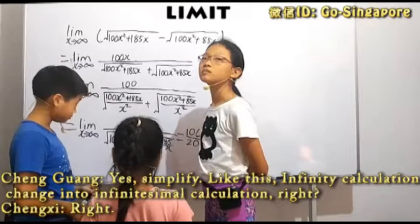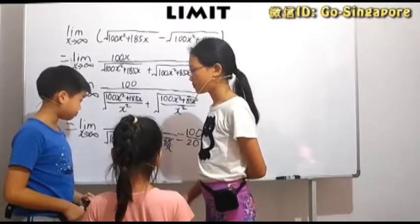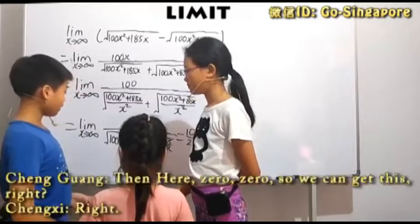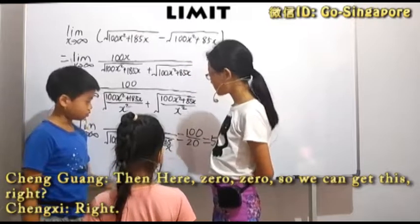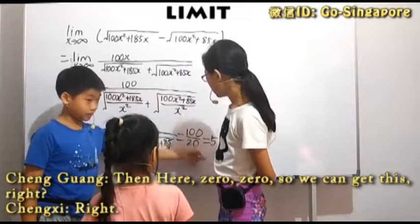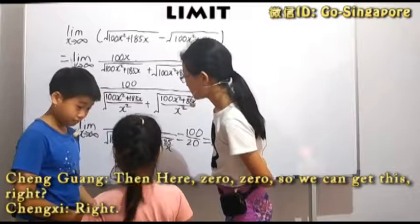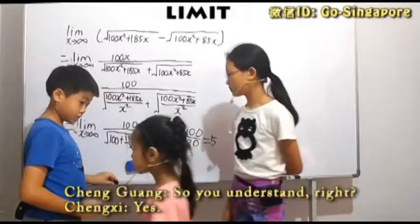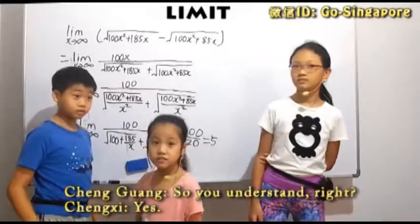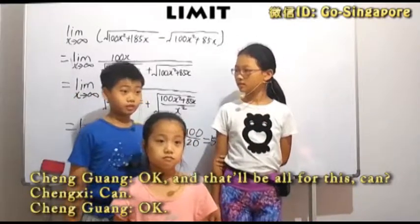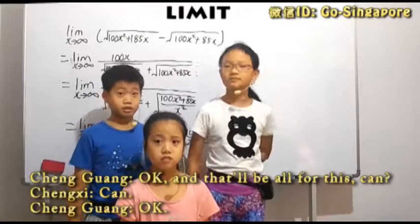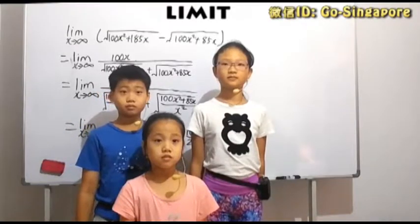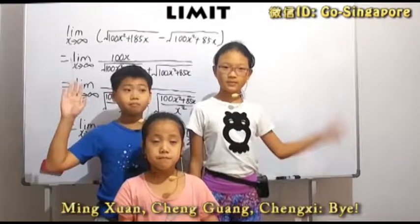Here, at this point, can you understand? Yes. You know this process? This continuum will become 100 over, this is 0, right? Right! So square root 100, which is 10.